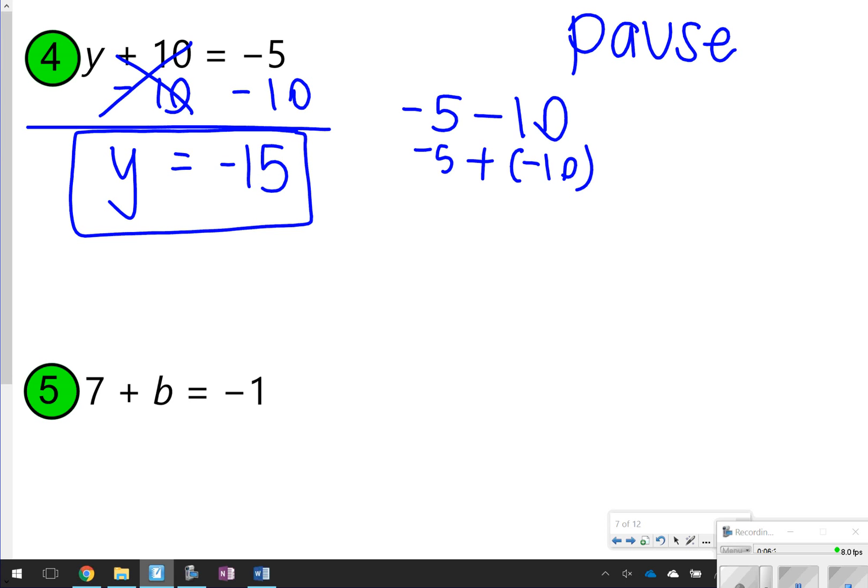Number 5 was just switched around, but still notice that 7 is being added to b to get -1. To get 7 away from that, I'm just going to do the opposite of what's happening to that 7. I'm going to subtract 7 from both sides. These 7s will cancel out. So all I'm left with is b. And then now I have to think about what is -1 - 7. -1 - 7 is the same thing as -1 + (-7). And that's going to give me -8. So my answer for number 5 is b = -8.